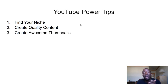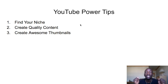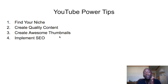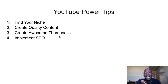Power tip number three: create awesome thumbnails. Create a thumbnail that sparks curiosity so viewers feel like 'I have to click on that.' Always ask yourself: would I click on that? Power tip number four: implement SEO — search engine optimization. I've done a few videos on YouTube SEO on my channel; I'll link one up in the top right corner of this video right now.